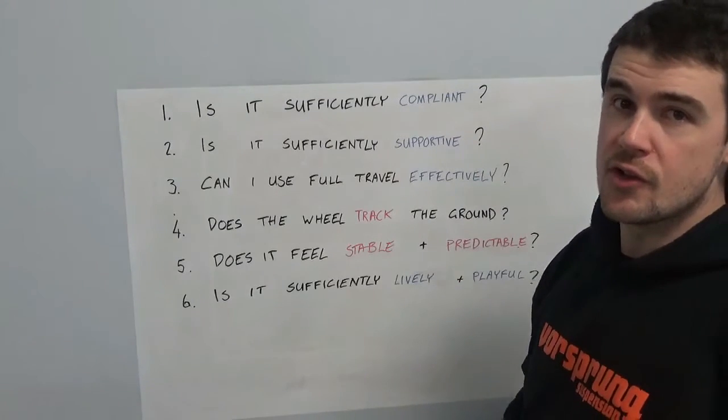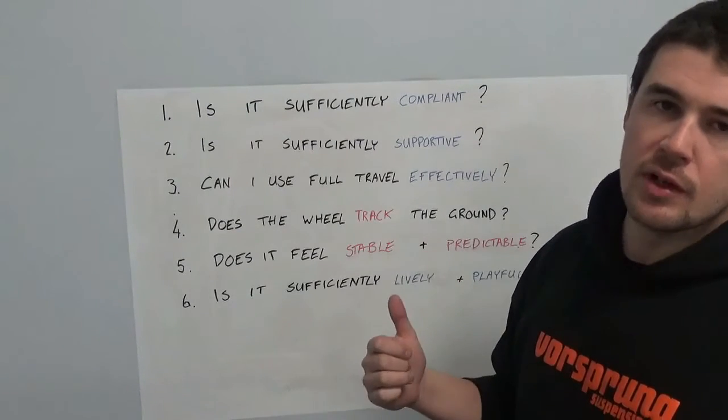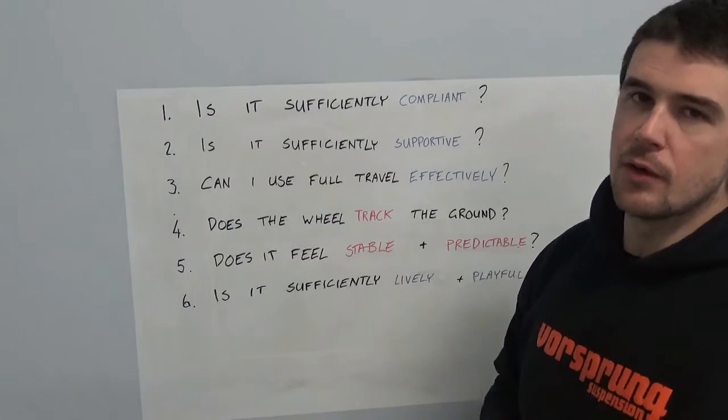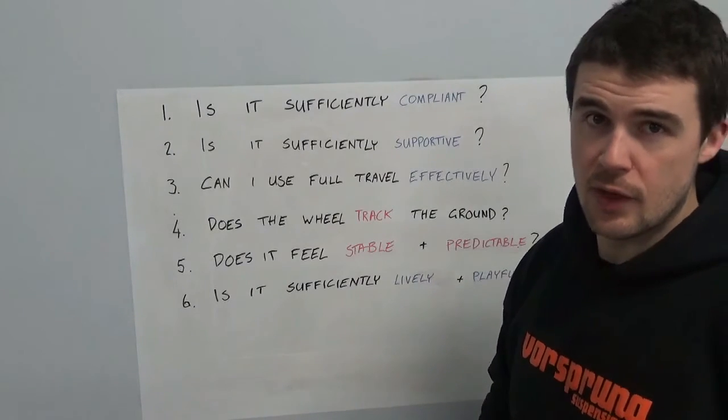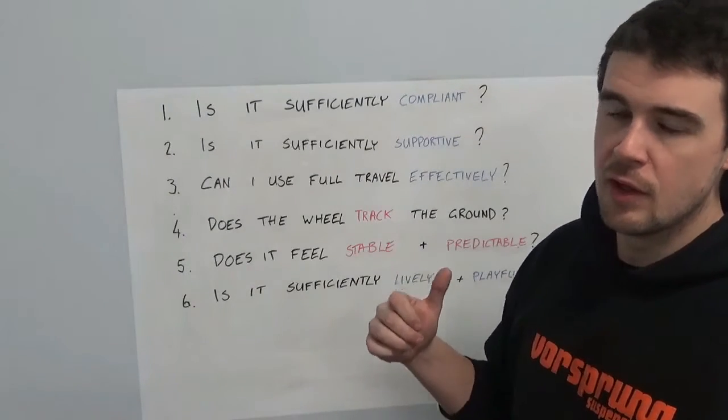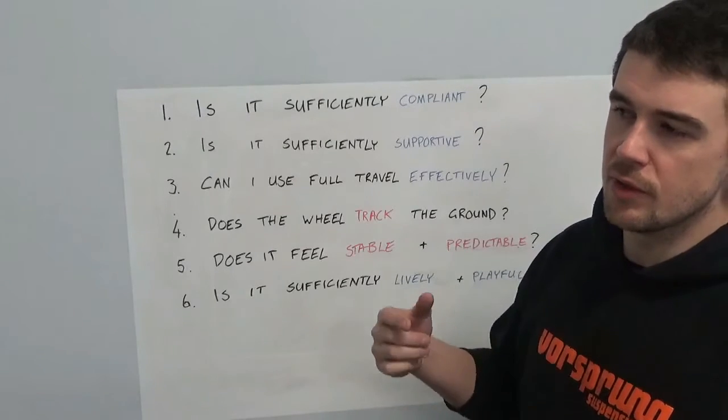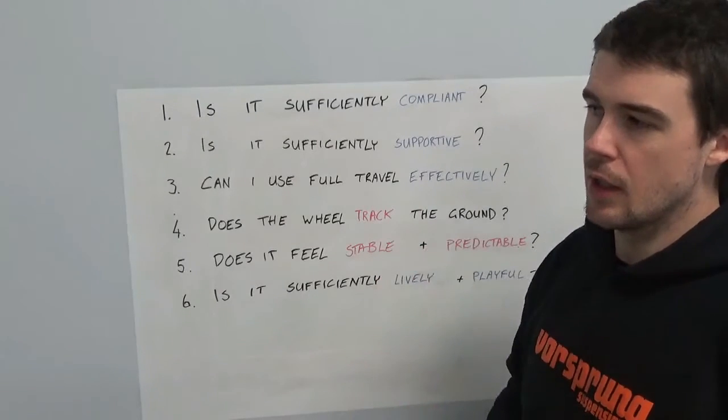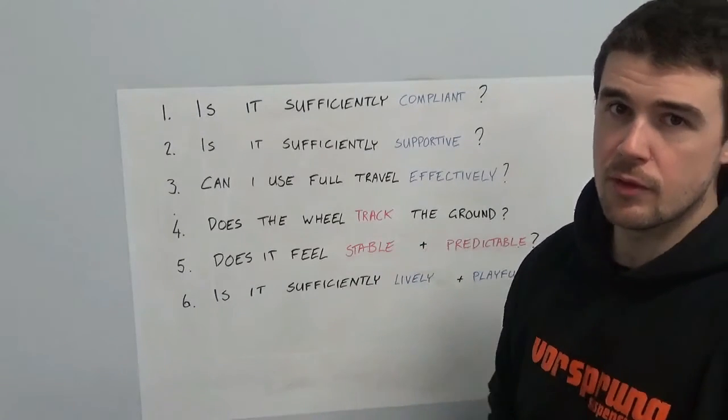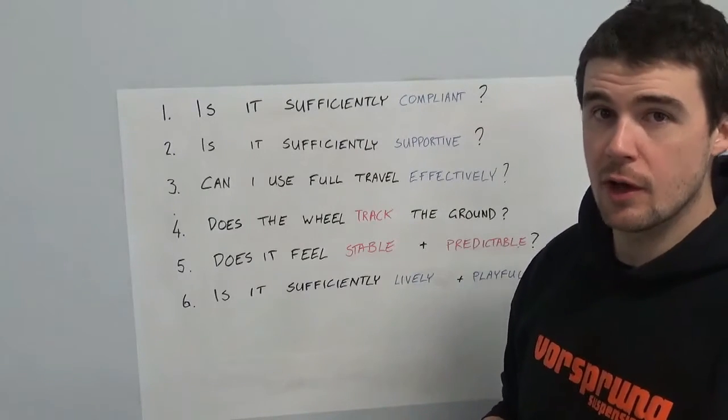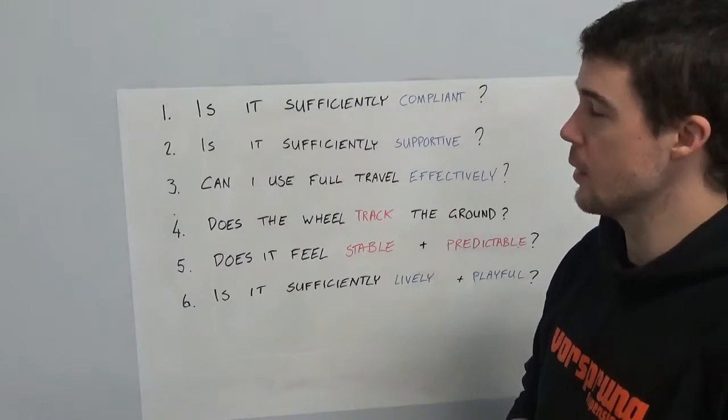If you're not, the first thing to check is tire pressure. Tire pressure has a huge influence on this. Run it as low as you can without causing adverse effects in terms of flatting too often, burping tubeless, damaging rims, tires rolling sideways in corners and so forth. There's no real advantage to running higher tire pressure than you need to on a mountain bike anyway.